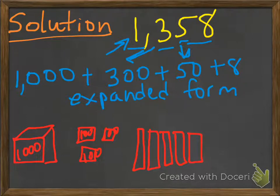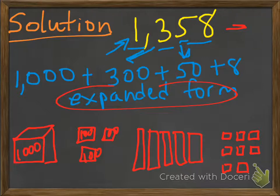And then for the ones place, the 8, we can just draw little blocks, little single blocks. So six, seven, and eight. So there's a few ways we could represent the same number: just the number itself, expanded form, and then, of course, using blocks.